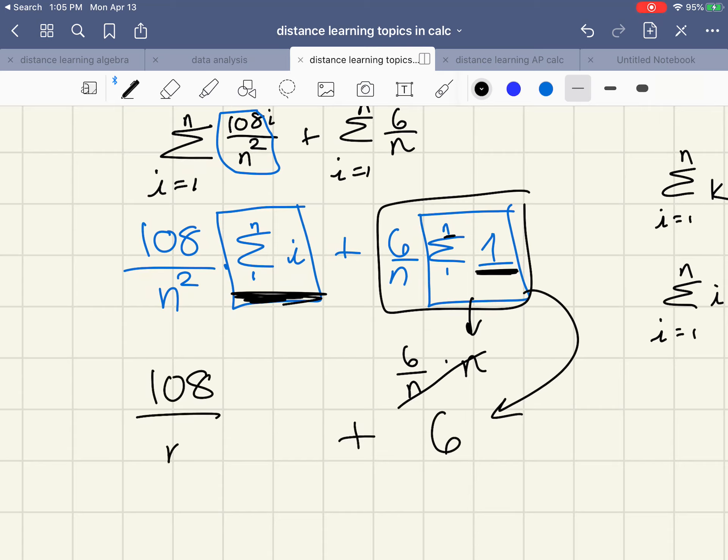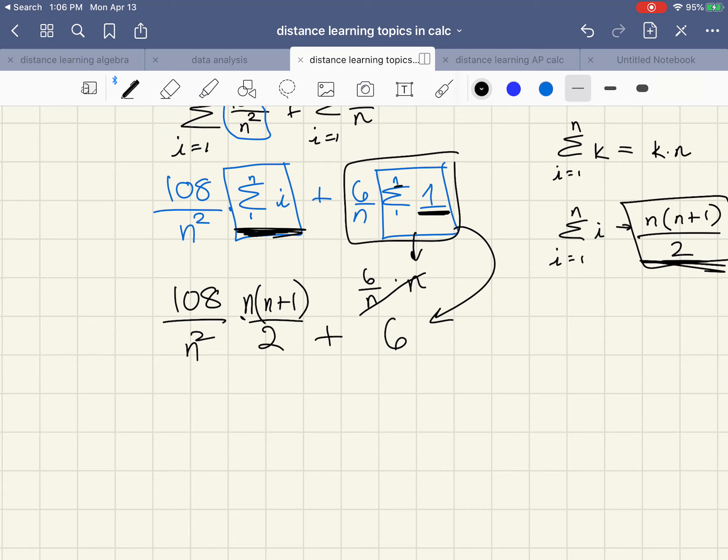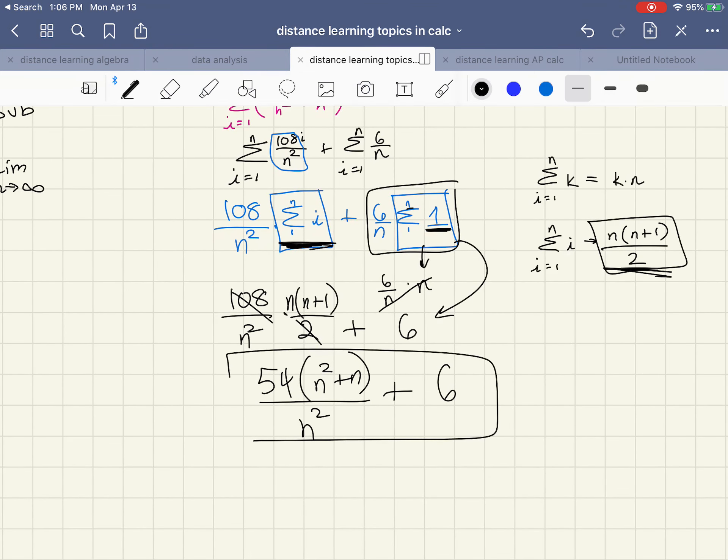So this piece here is going to be replaced with this, so you have 108 over n squared times n times n plus one over two. I'm going to do a little bit of algebra but not a lot. I know that 2 goes into 108, 54 times and I know that this is n squared plus n.